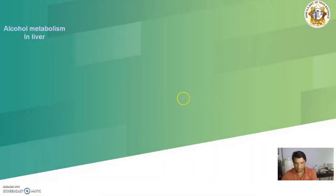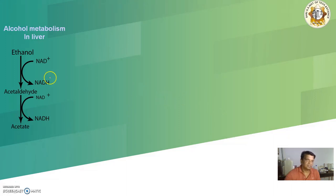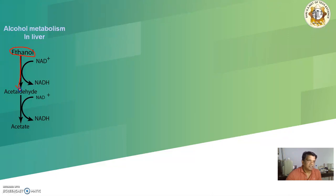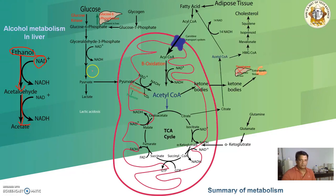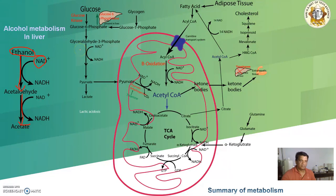So how does alcohol play a role in fatty liver? In metabolism, when you take alcohol it gets metabolized to acetaldehyde in the liver, and this acetaldehyde gets converted into acetate, a process that requires NAD, which gets converted to NADH. This whole metabolism — including glycolysis, beta oxidation, and the TCA cycle — will be affected, as we will see.